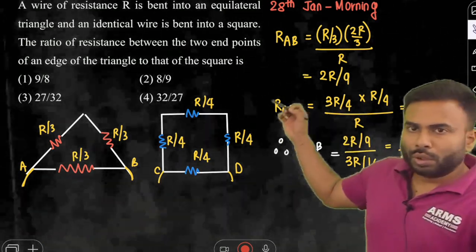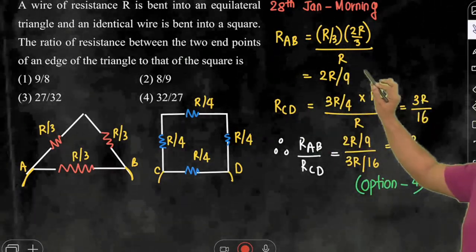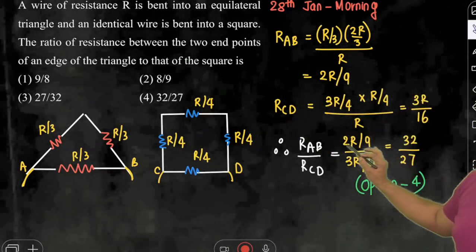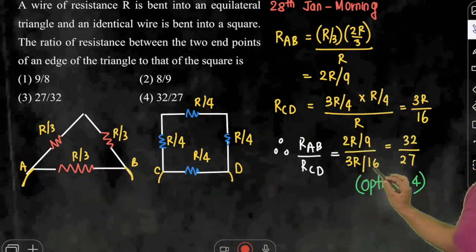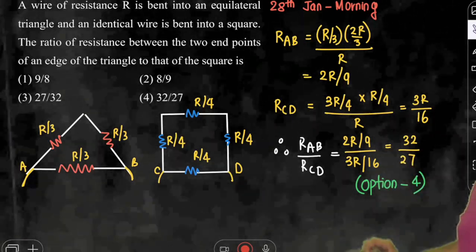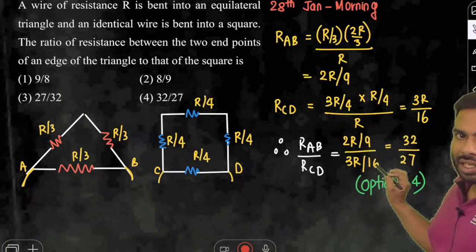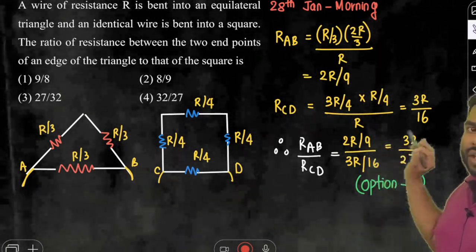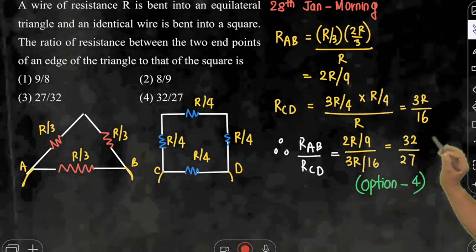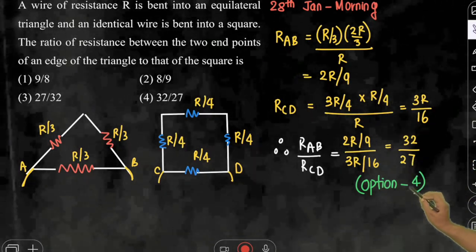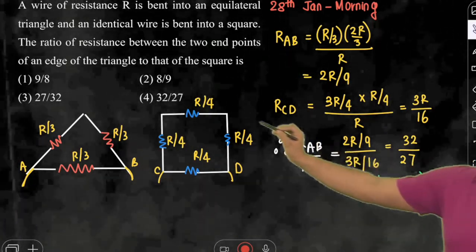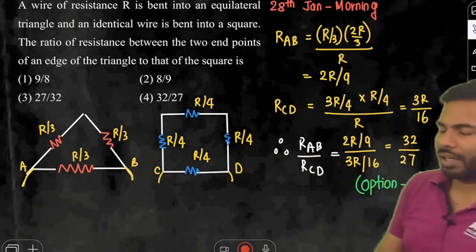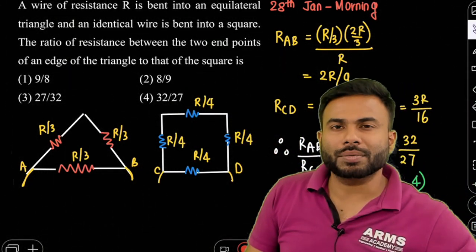Taking the ratio and dividing — R cancels — we get (2/9) divided by (3/16), which equals 2 × 16 over 9 × 3, giving 32/27. Therefore, option 4 is the right answer. I hope you have understood the question.